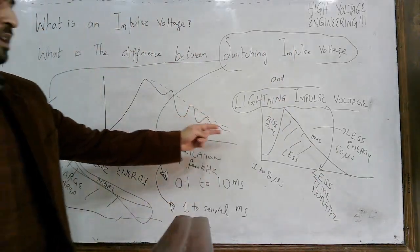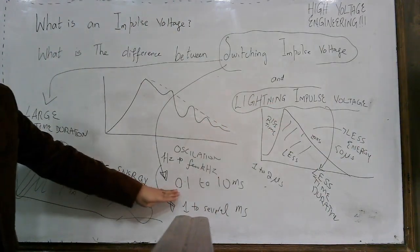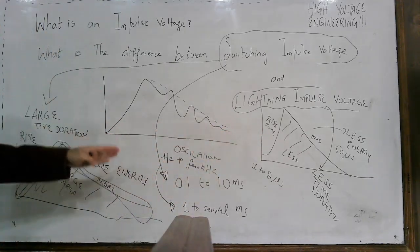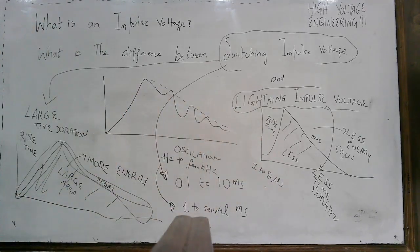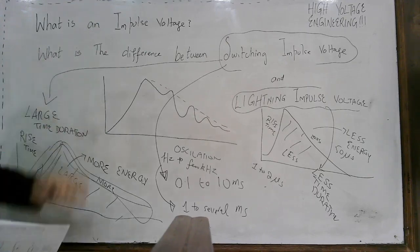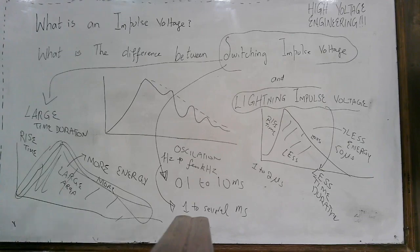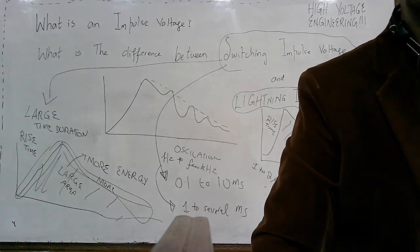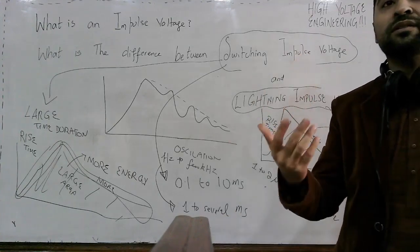Lightning impulse voltage quickly rises and quickly decays, while switching impulse waveform rises in more time as compared to the lightning impulse waveform. Here we have discussed the key differences between the switching impulse waveform and the lightning impulse waveform, and we have also discussed what is an impulse voltage. In our next upcoming video lecture, we are going to discuss how to generate these voltages.